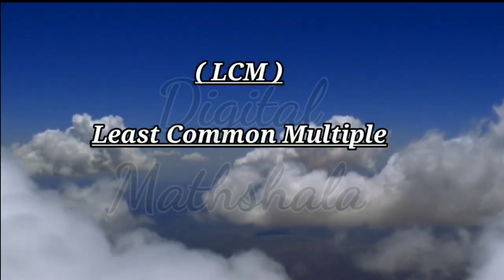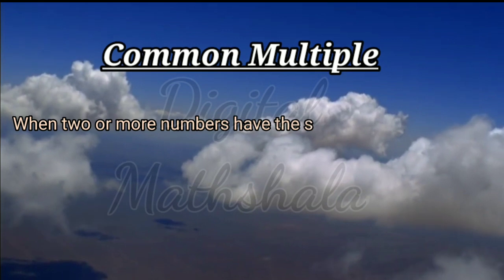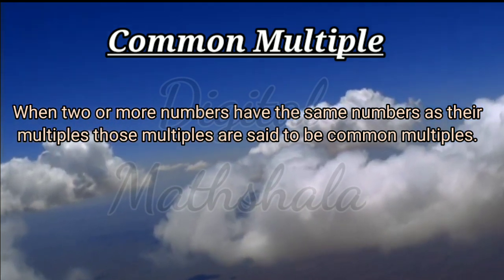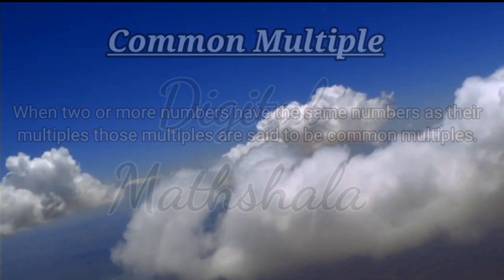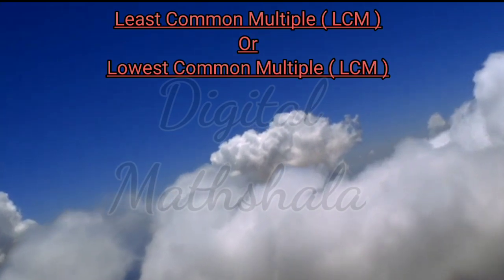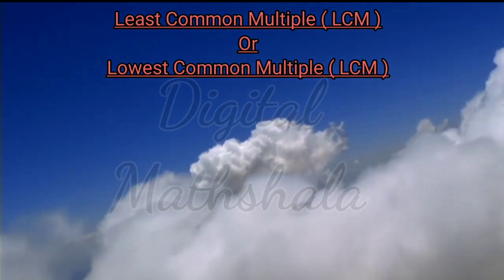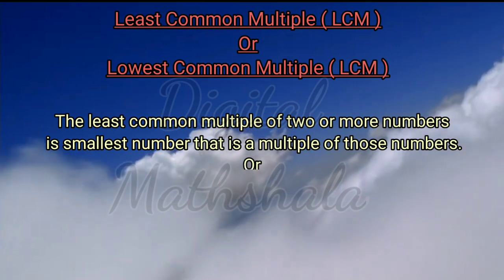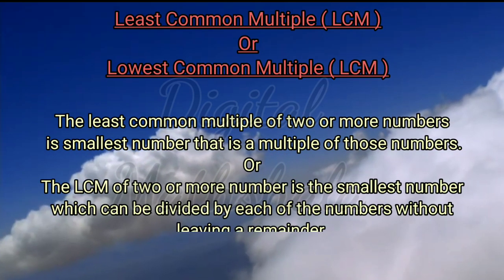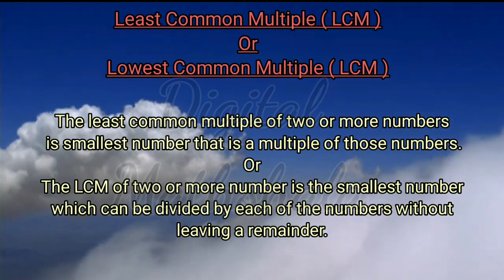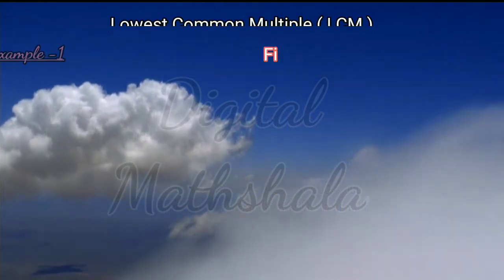Let us learn about the Least Common Multiple, or LCM. When two or more numbers have the same numbers as their multiples, those multiples are said to be common multiples. The least common multiple of two or more numbers is the smallest number that is a multiple of those numbers.